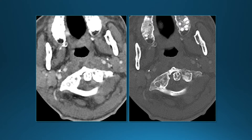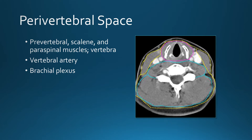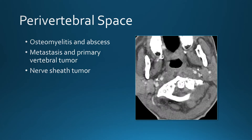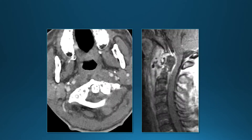Next space: a mass in front of the spine is in the perivertebral space. The perivertebral space normally contains the prevertebral, scalene, and paraspinal muscles, the vertebrae, vertebral artery, and brachial plexus. Pathology includes infection such as osteomyelitis and abscess, metastasis to the spine, primary vertebral tumors, and nerve sheath tumors. In this patient with fever, MRI shows enhancement surrounding the odontoid process — this is infection in the perivertebral space.